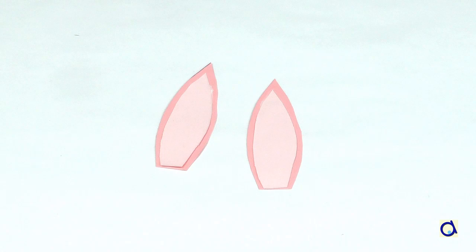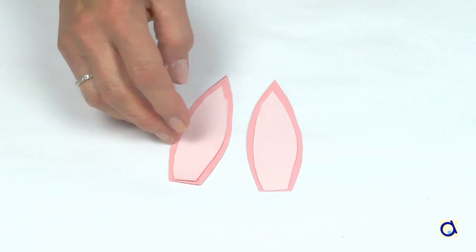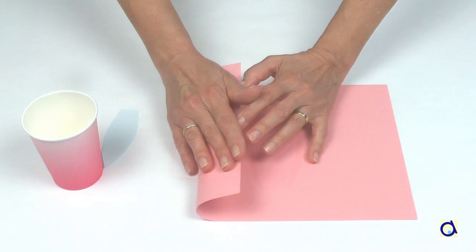Start by making the ears of the rabbit. You will need coloured construction paper. I chose two shades of pink to make the ears of my rabbit. It went well with the colour of the cup.